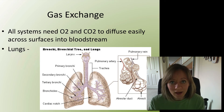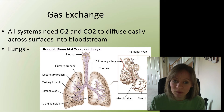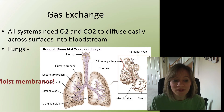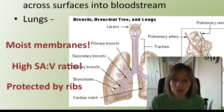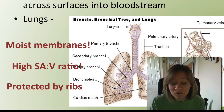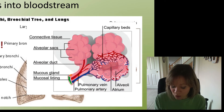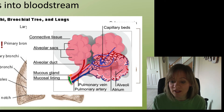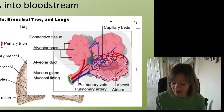In terrestrial animals, we don't have gills — we have lungs. We breathe air, which is a different respiratory media, but we still need our membranes to be moist and we need a high surface area to volume ratio, and of course we need them to be protected. Very similar to fish, we need very close contact between the respiratory media and the capillaries — right here is where the diffusion of carbon dioxide and oxygen is happening.